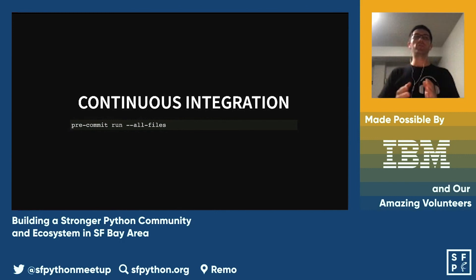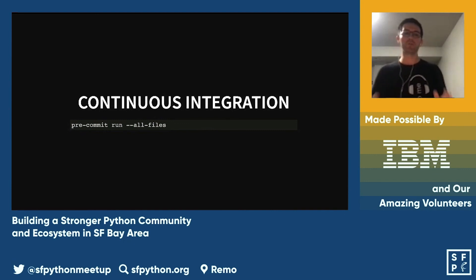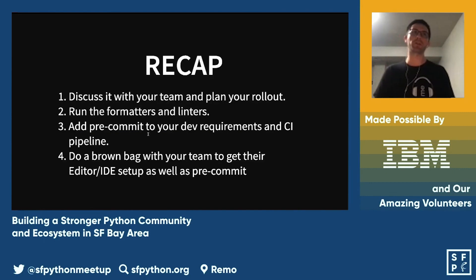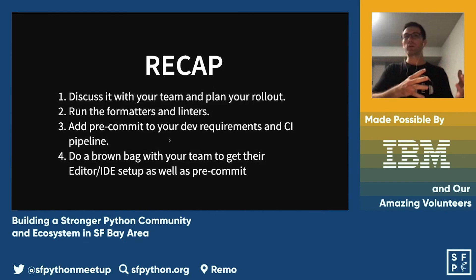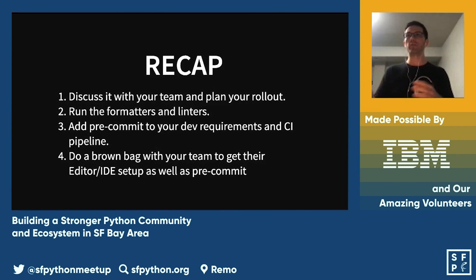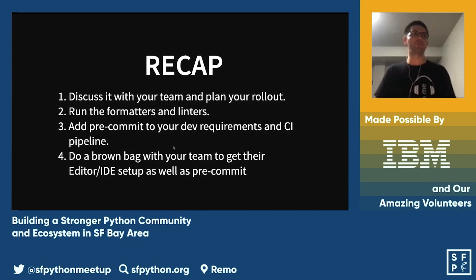To recap: discuss it with your team and plan a rollout. Run the formatters and linters — pick one tool, run it, fix the issues, add the equivalent pre-commit configuration, and set up pre-commit to avoid regressions. Depending on the size of your codebase, run all tools at once or add them one at a time. Do a brown bag with your team to make sure everyone is set up in their IDEs and has pre-commit installed.